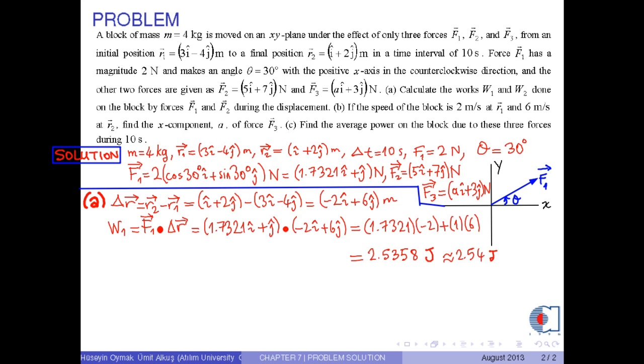The work done by force F2 is W2 equals F2 dot delta R, then with the corresponding values and by the rule of dot product, we obtain 32 joules.